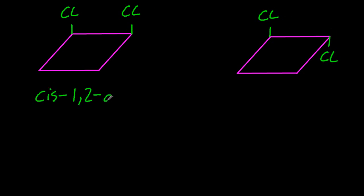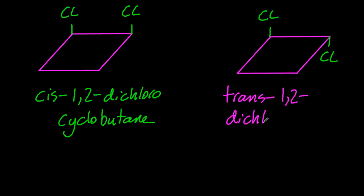So not just cyclopropane. The IB wants you to know about cyclobutane, which is four carbons in a ring structure. So that's going to be cis-1,2-dichloro-cyclobutane. And that will be trans, 1,2-dichloro-cyclobutane.